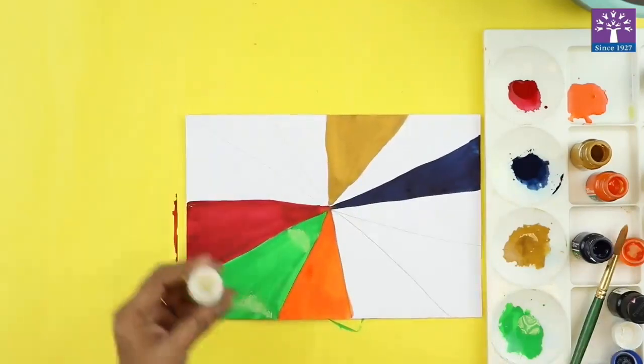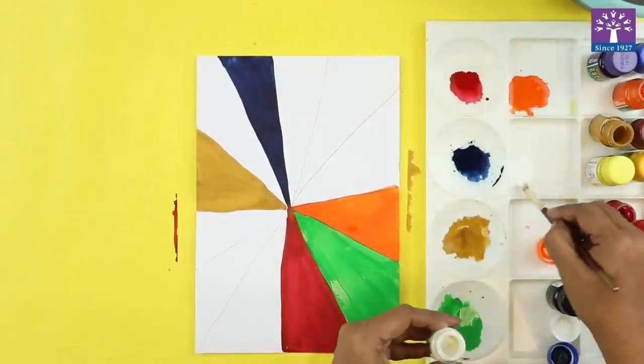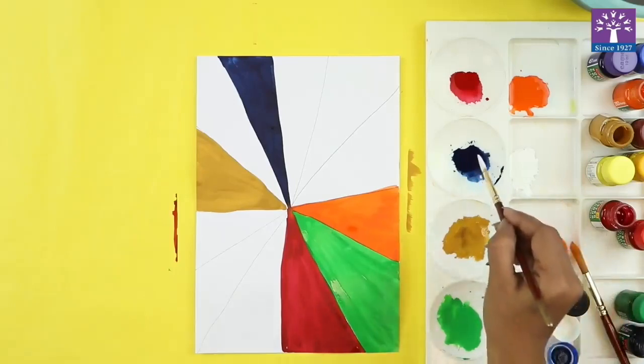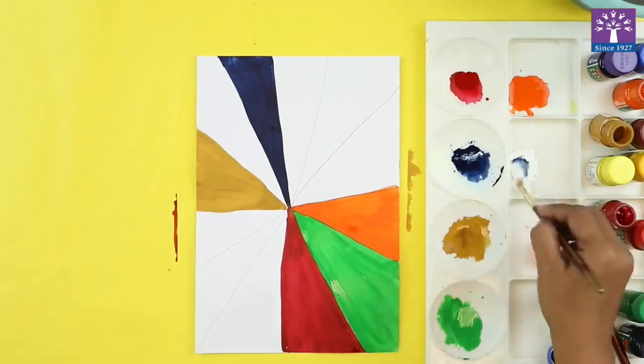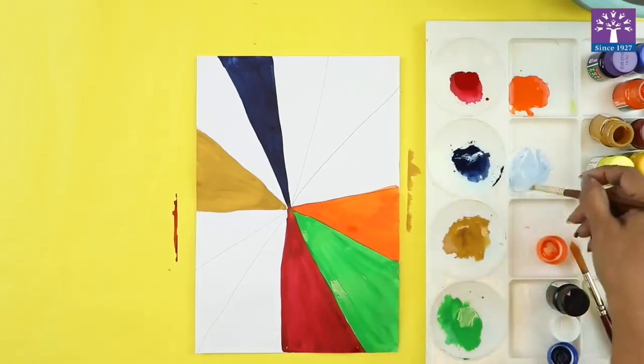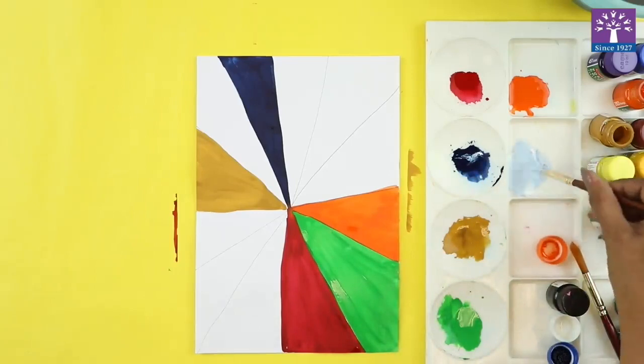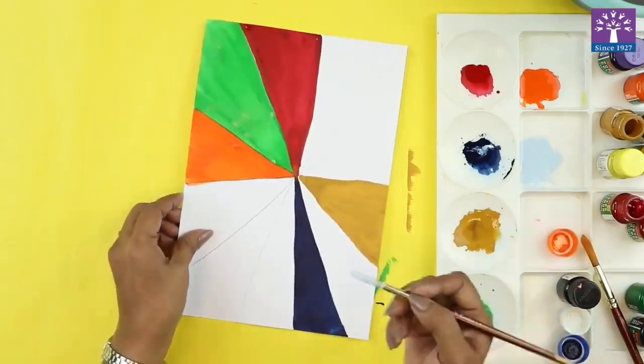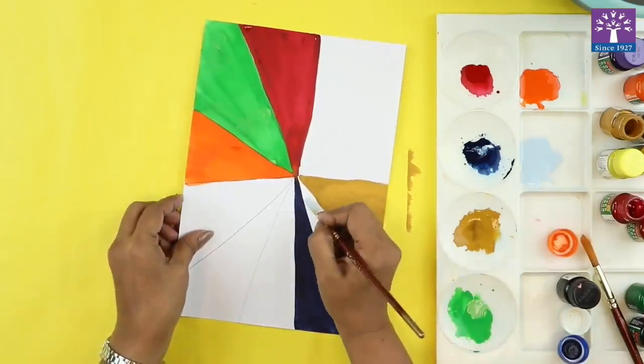Now what I am going to do is I am going to take a little bit of white color. I hope you are seeing the palette. I have taken the white paint. I will pick up any one color, I am taking this blue color and mixing it. So see, I created the tint of this blue color. This is called the tint. Now I am going to paint in between this.